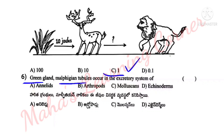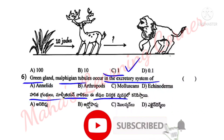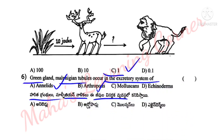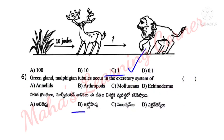Next question: Green gland and malpighian tubules occur in the excretory system of which group? Options: A. Annelids, B. Arthropods, C. Molluscs, D. Echinoderms. Correct answer: Option B, Arthropods — malpighian tubules are found in Arthropods.